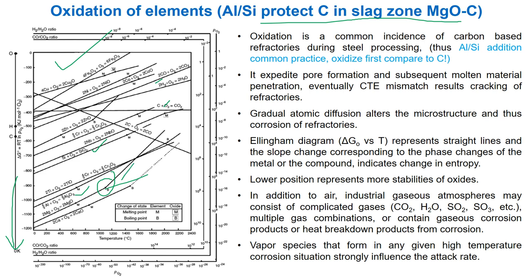The lower position in the Ellingham diagram represents more stability of oxides. In addition to air, industrial gaseous atmospheres may contain complicated gases like CO₂, H₂O, SO₂, SO₃, etc. Multiple gas combinations, gaseous corrosion products, or heat breakdown products forming corrosion vapor species in any given high temperature situation strongly influence the attack rate.